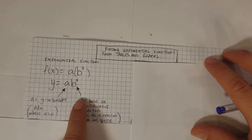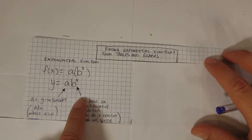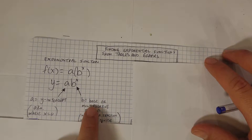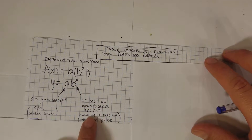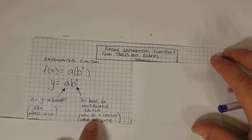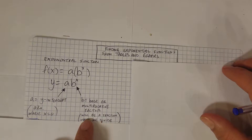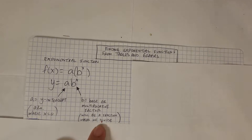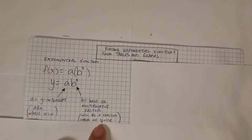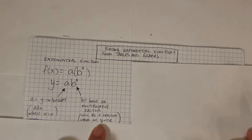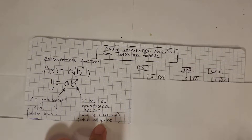B is called the base — in any math book you look at it's called the base — which is, in other words, the multiplicative factor, which is the number that you're multiplying or dividing by. Now if you're multiplying it's going to be a whole number; if you're dividing it's going to be a fraction because the number will actually be getting smaller and smaller. Multiplying by a fraction is the same thing as dividing.